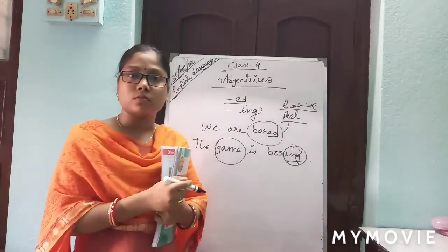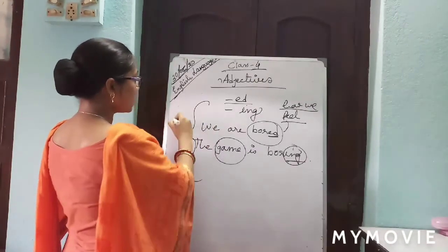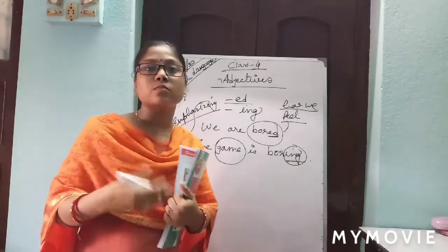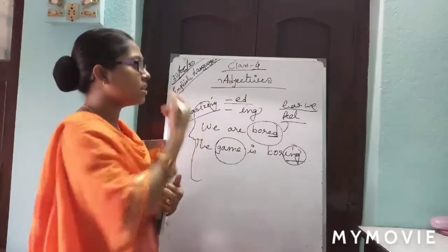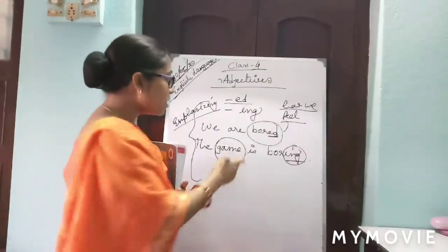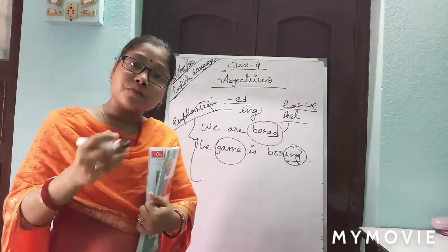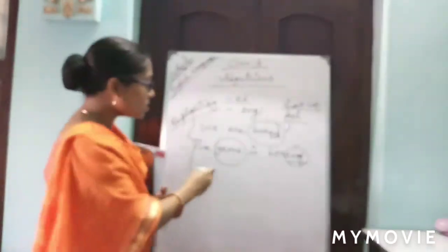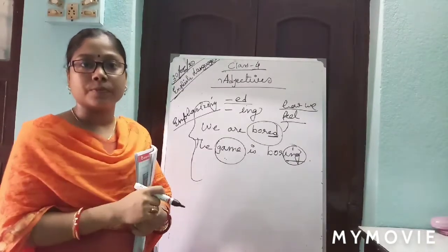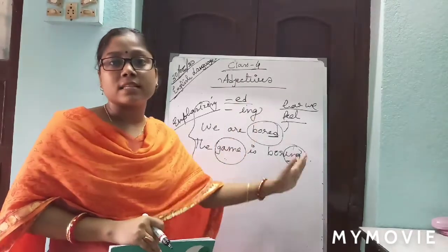These are a different kind of adjective — they are actually emphasizing nouns, so we can call them emphasizing adjectives. Ending with '-ing' and ending with '-ed': the '-ed' adjective tells us how we feel, and the '-ing' adjective relates to the thing which makes you feel that way.